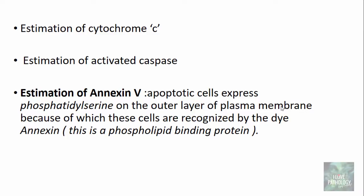This expressed phosphatidylserine is recognized by the dye called annexin, which is a phospholipid binding protein. If you see that this annexin is bound to a particular cell, that means that particular cell is undergoing apoptosis.